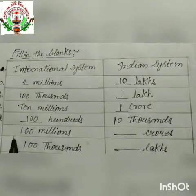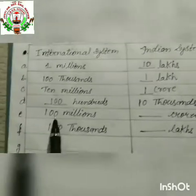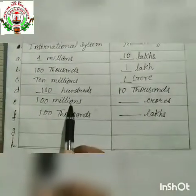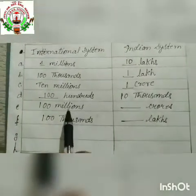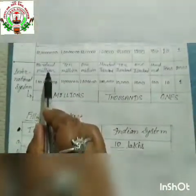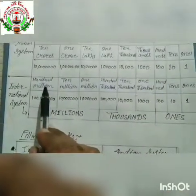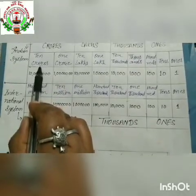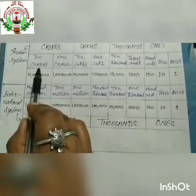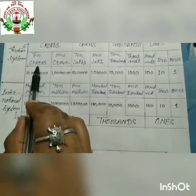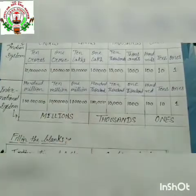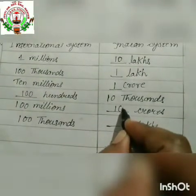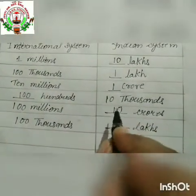Now next is E: hundred million. Looking at the international system, hundred million is equal to ten crore in the Indian system. So we write: ten crore.